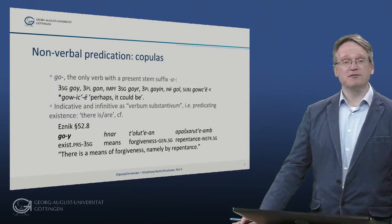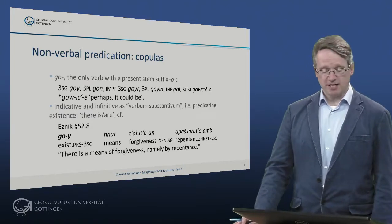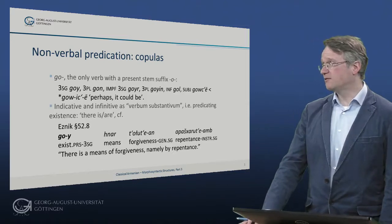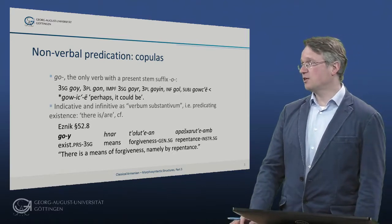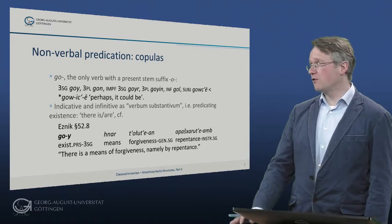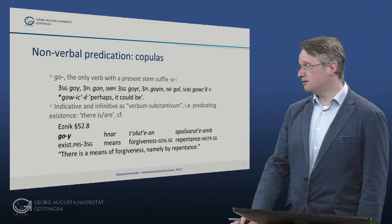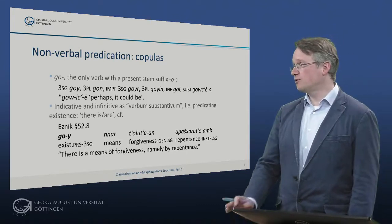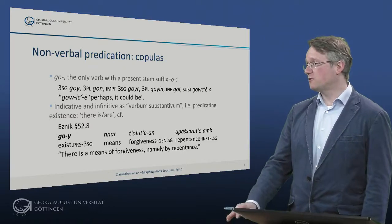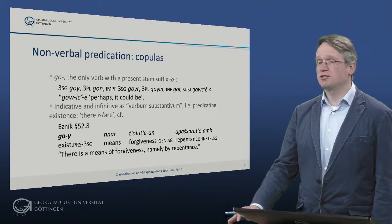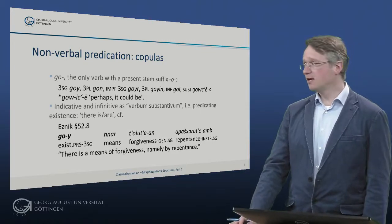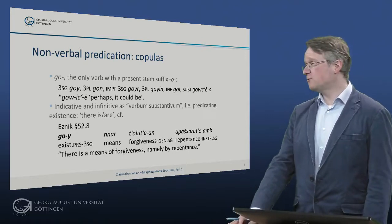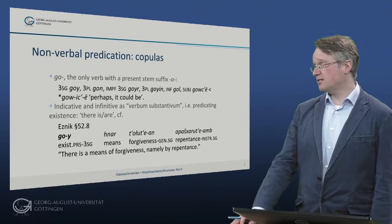First, let's have a look at copular verbs. There is a defective verb 'go,' the only verb with a present stem suffix 'o' in Armenian, that forms various present tense forms like 'go' (third singular), 'gon' (third plural), and there's an imperfect 'goil,' 'goyin,' an infinitive 'gol,' and a subjunctive 'goc.' In the indicative and infinitive it is used as a verbum substantivum, so it predicates existence — there is, there are.